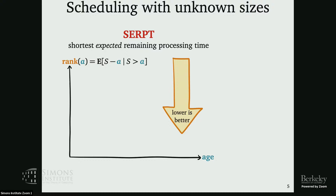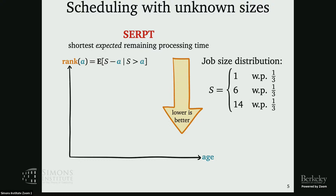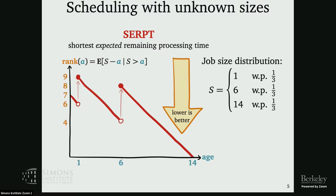As an example, for a particular job size distribution, this is what SERPT looks like. It adapts its priorities based on information learned — as a job passes age one, we realize this job isn't just size one, it's going to be bigger, so we give it a worse rank. Similar deal at age six.